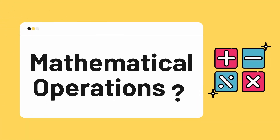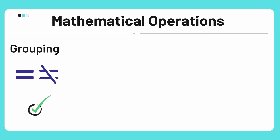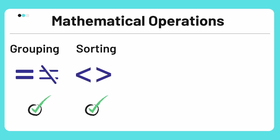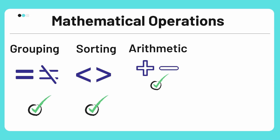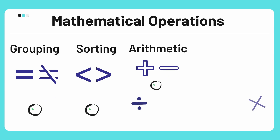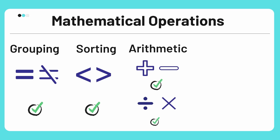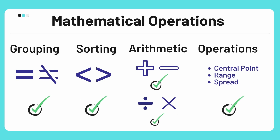Let us now see what mathematical operations can be performed on ratio data. We can easily group the data using equal to and not equal to operators. Sorting is also possible. Addition and subtraction can also be done — for example, we can say that 3 km is 1 km farther than 2 km. We can also multiply and divide ratio data as there is a meaningful zero — for example, we can say that a 2-year-old child is half the age of a 4-year-old child. Apart from these, we can also calculate the central point, which can be mean, median, or mode, range, and the spread of data, which can be standard deviation or variance.